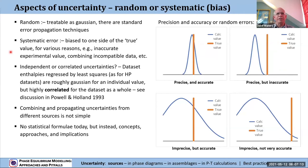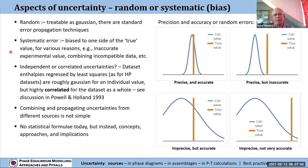Another aspect is whether individual uncertainties are independent of each other or correlated. The enthalpies in data sets are likely to be correlated — in the Holland and Powell data sets they've been regressed by least squares, so whereas an individual entropy value may have roughly Gaussian error distribution, as a set they're highly correlated and the covariance matrix is an integral part of the data set. There's a discussion of that in Powell and Holland 1993.